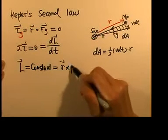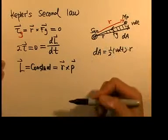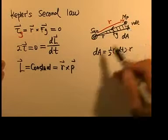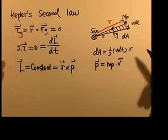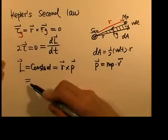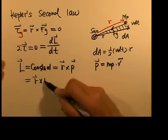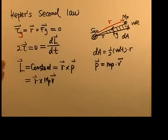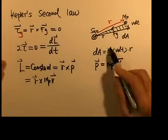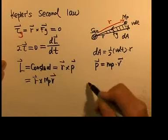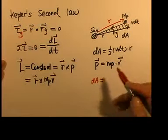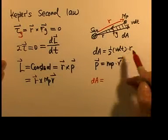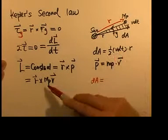L is defined as r cross p. Here r is the position vector and p is the linear momentum of the planet — that is, mass of planet mp times its instantaneous velocity v. So angular momentum equals r cross linear momentum mpv. We already know that dA equals one-half base times height, so we can continue: dA equals one-half of r and v.